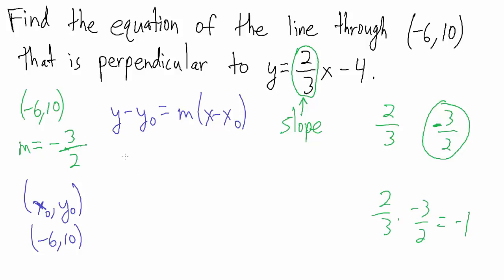Plugging in, we get y minus ten equals negative three-halves times the quantity x minus negative six. Since x minus negative six equals x plus six, we simplify that right away.